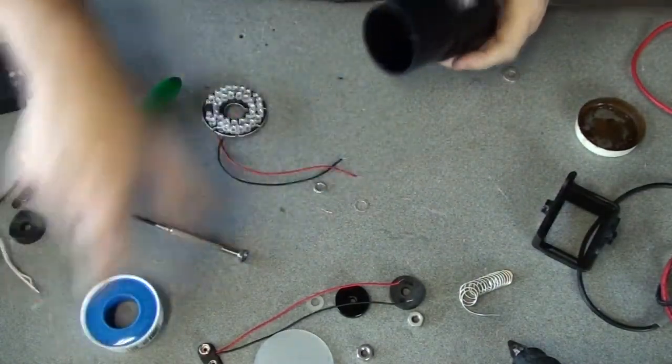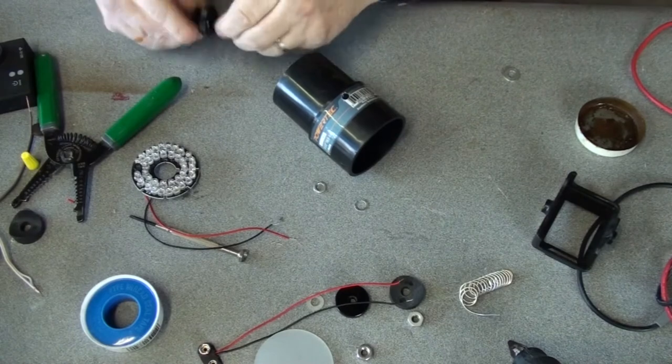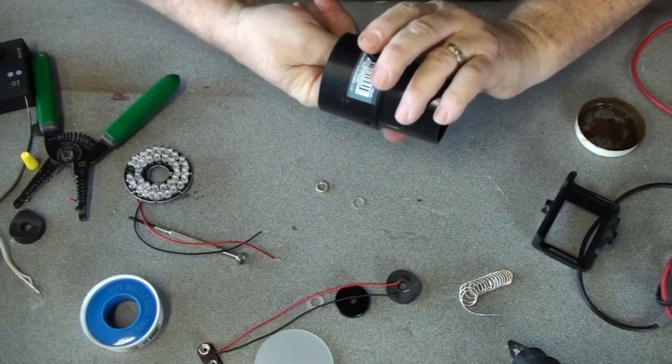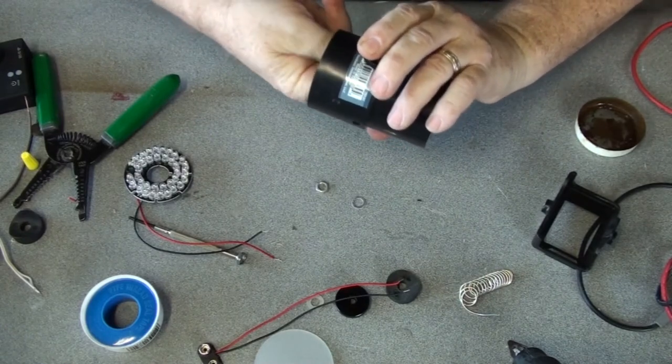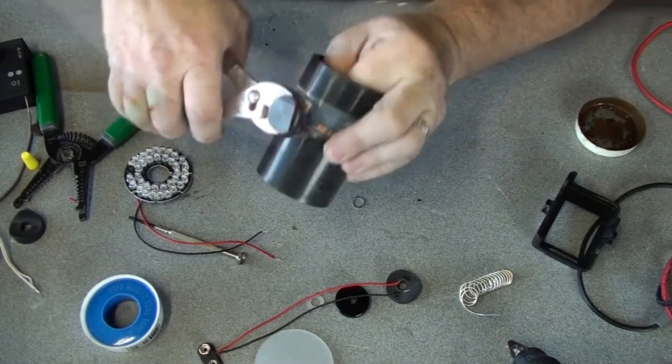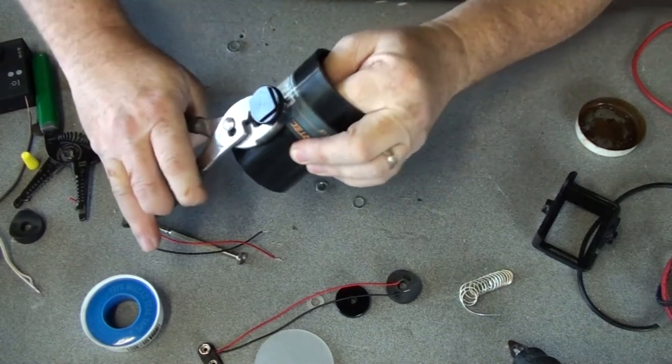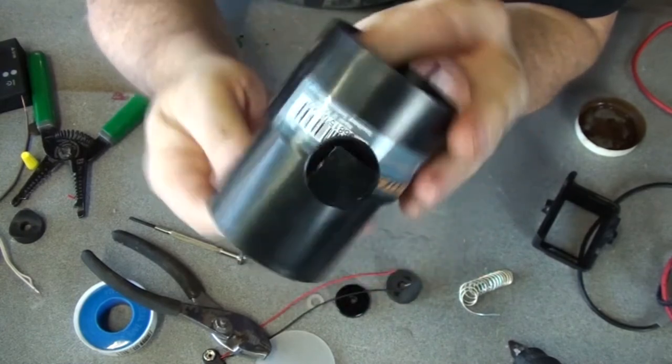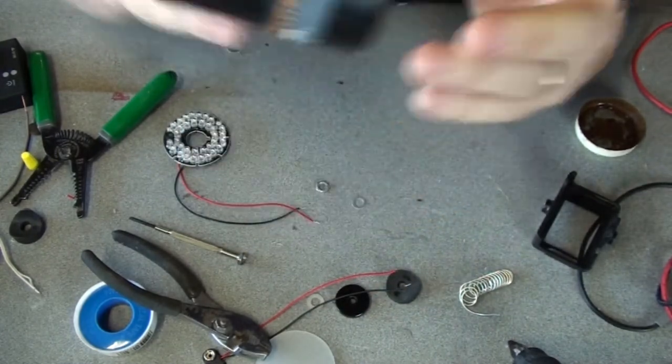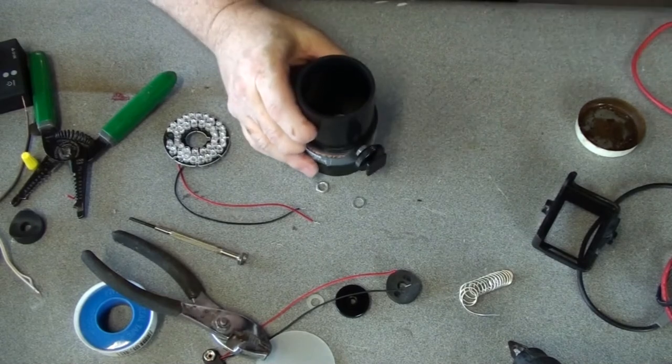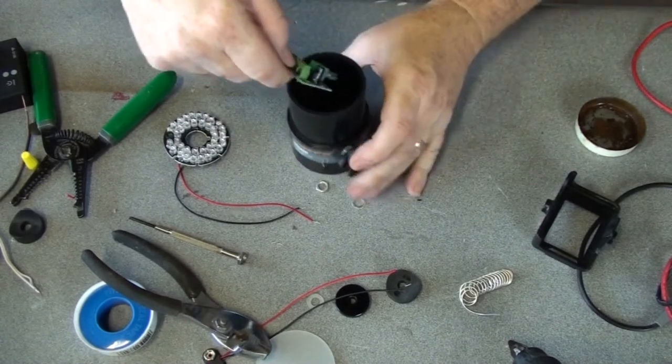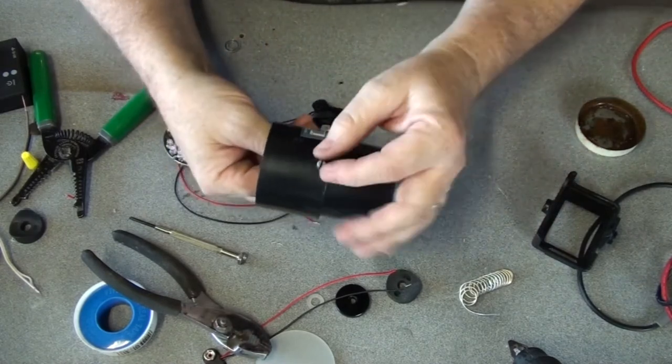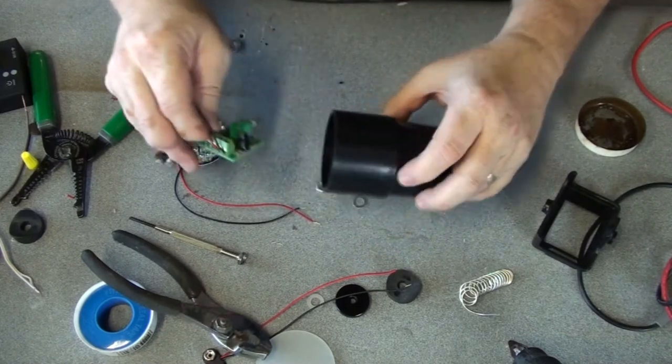Alright, so here's the body of my light. Here is my hot shoe. So there's my cold shoe or hot shoe that's going to be attached to the camera itself. Now this is going to go on this side as a switch. But before I do that are some things I need to do.